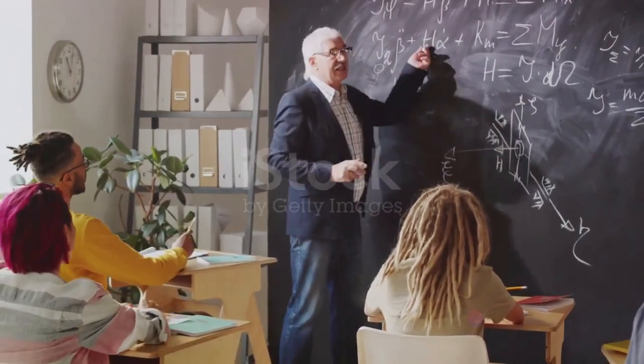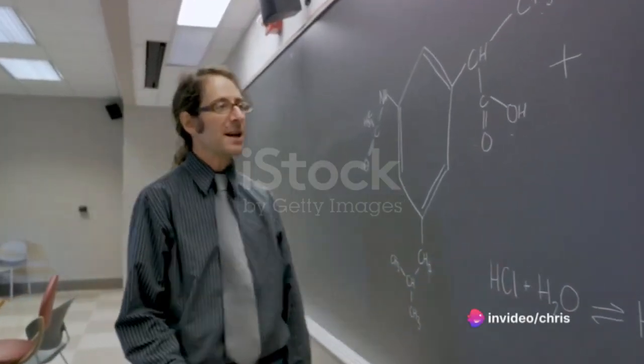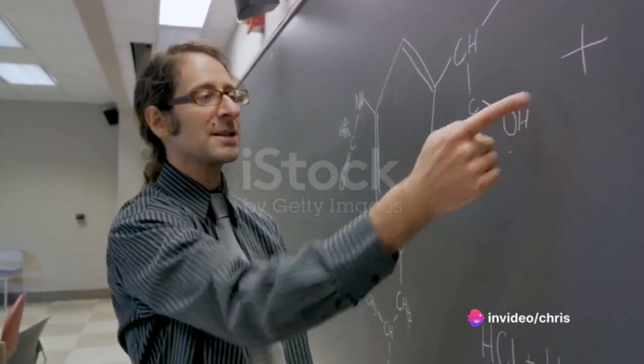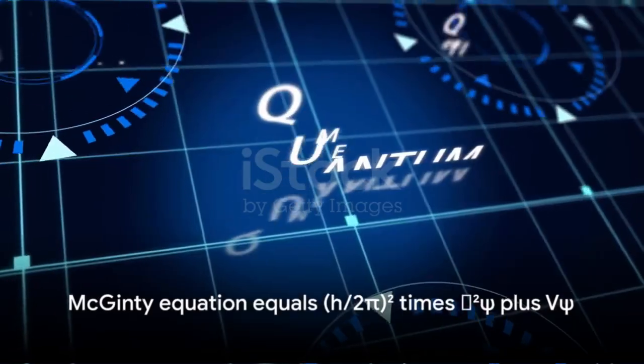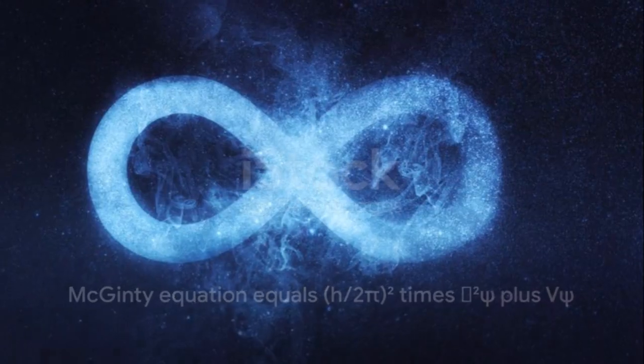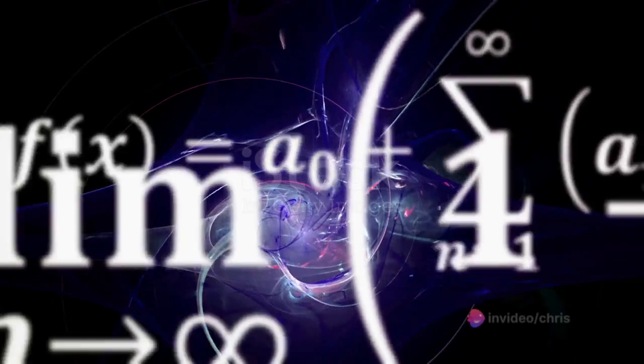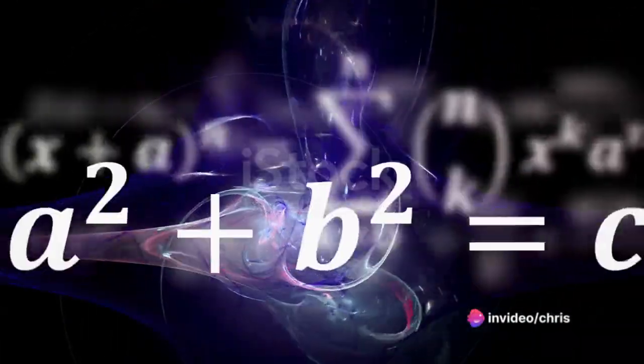The culmination of this complex process may look something like this. The McGinty equation equals H2P, 2 times 2Ps plus VPs, and Wheeler-DeWitt equation equals HGPPEs equals zero. Don't worry if these formulas seem complicated, they're essentially mathematical representations of our universe.